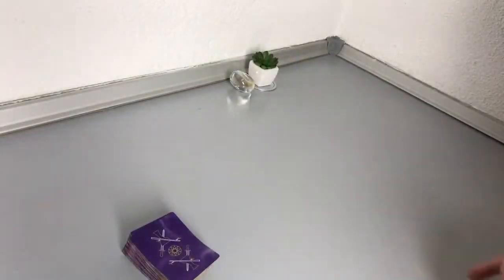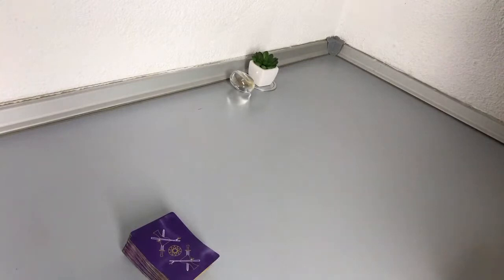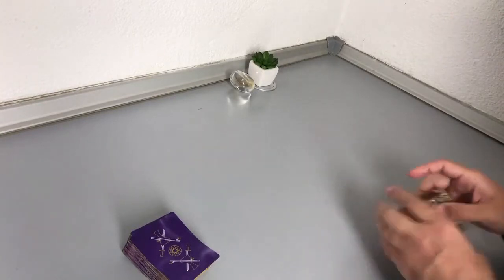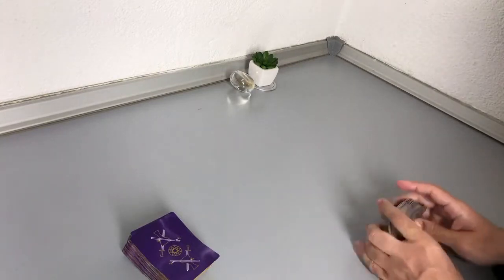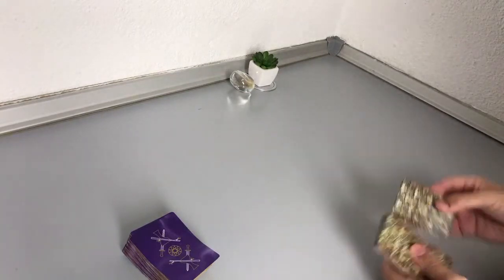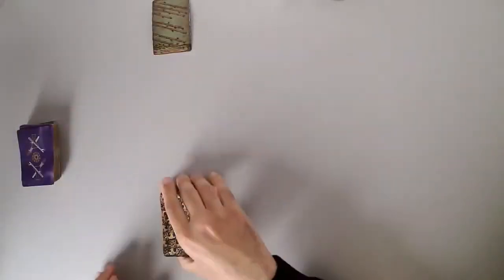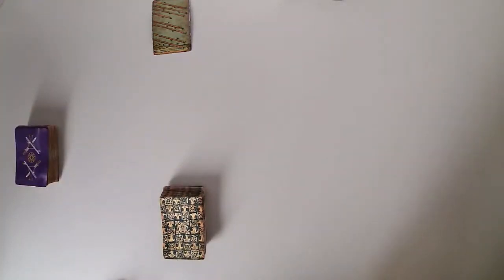Now let's start with the reading. First, let's shuffle three times for you. The overall energy of those 72 hours is eight of wands. Expect some rapid changes. There may be communication or there's some progress in that connection with the person that is on your mind. But let's see the other cards.